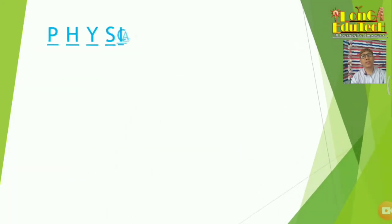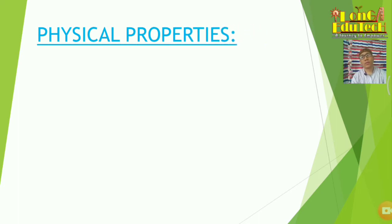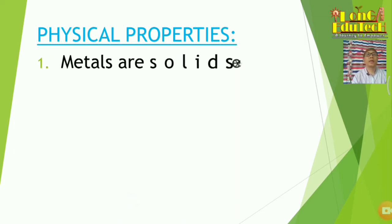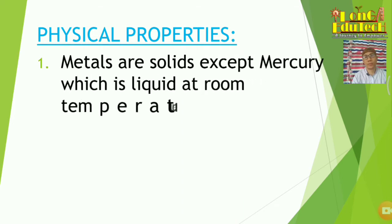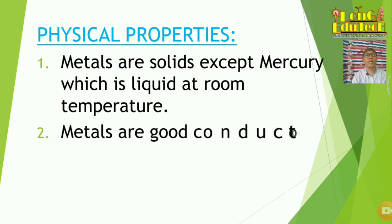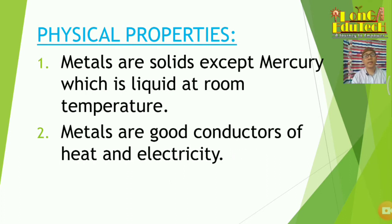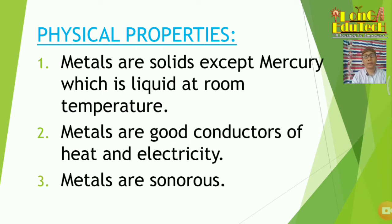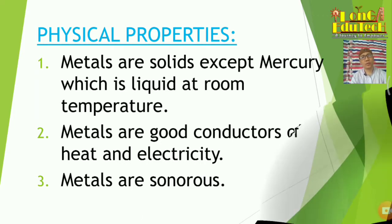Now we'll discuss the physical properties of metals. First, metals are solids, except mercury which is liquid at room temperature. Second, metals are good conductors of heat and electricity. Third, metals are sonorous — sonorous is the property of a metal which produces a ringing sound when hit or knocked, like a school bell.